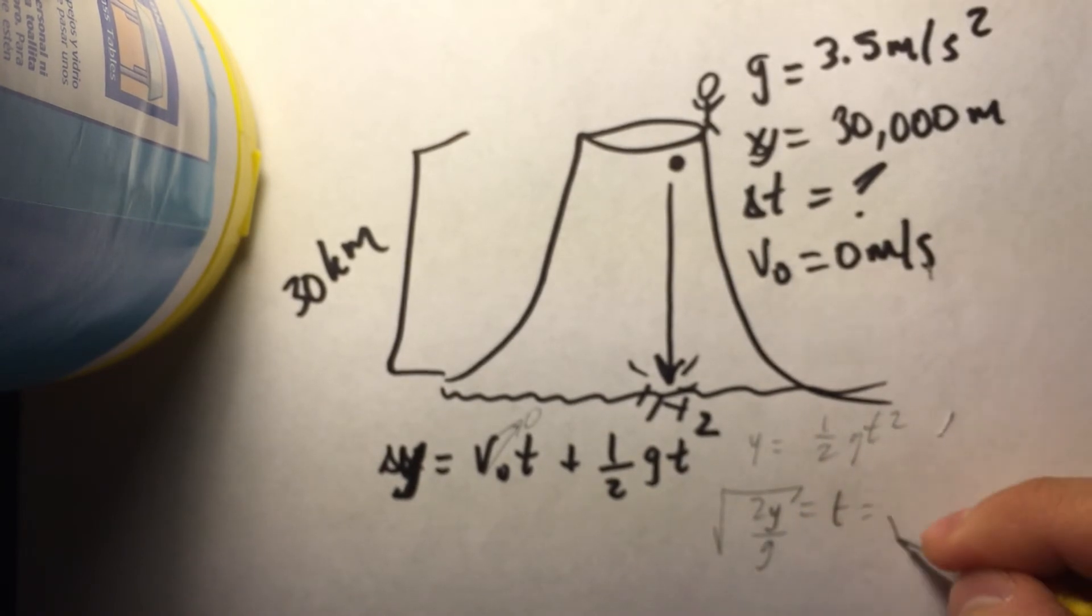So when we plug it in, we have something that looks like this. Y, our x, 30,000 meters over our g of 3.5. And with that in mind, after we take this, we have time of 130.931 seconds.